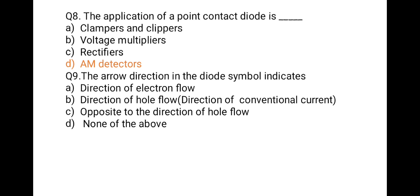The next question is: the arrow direction in the diode symbol indicates — option one: direction of electron flow; option two: direction of hole flow; option three: opposite to the direction of hole flow; option four: none of the above. The correct option is the direction of conventional current. Conventional current always flows from positive to negative, which is the direction of holes. So the correct option is B — direction of hole flow.